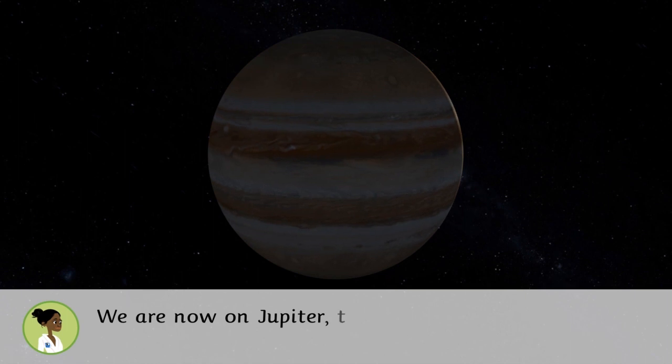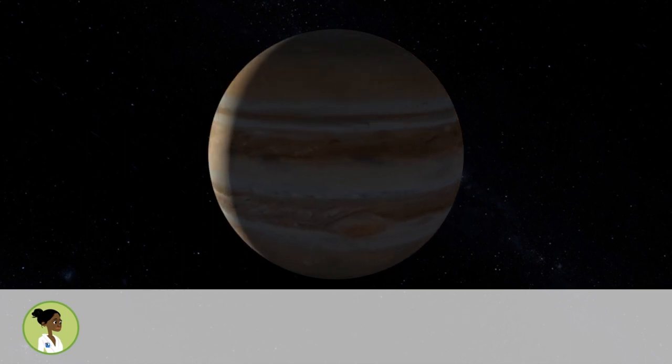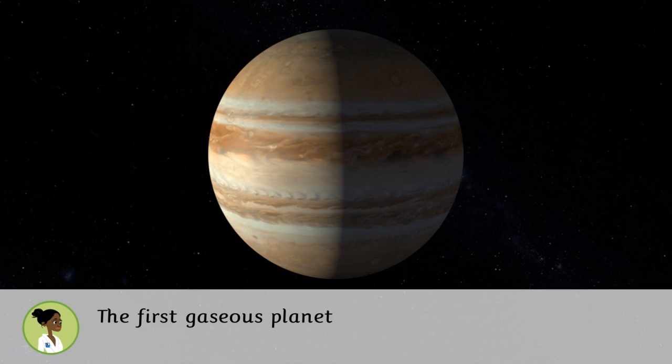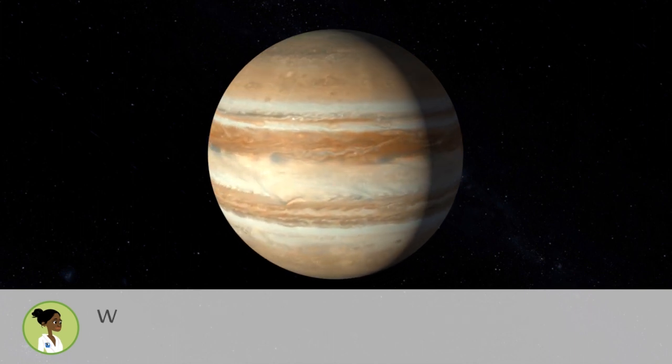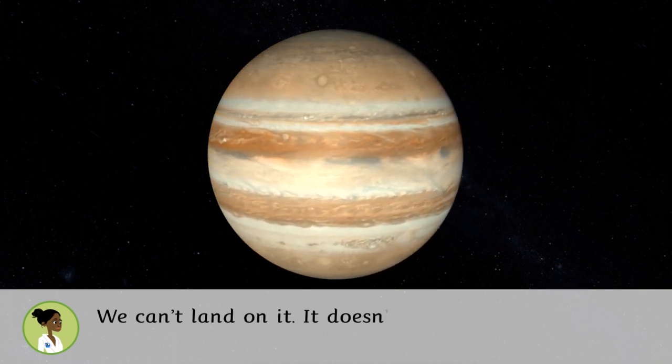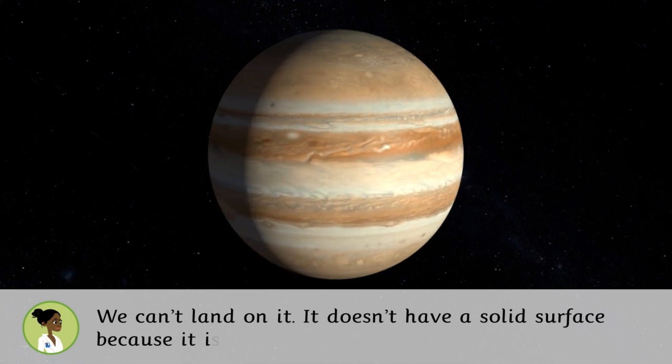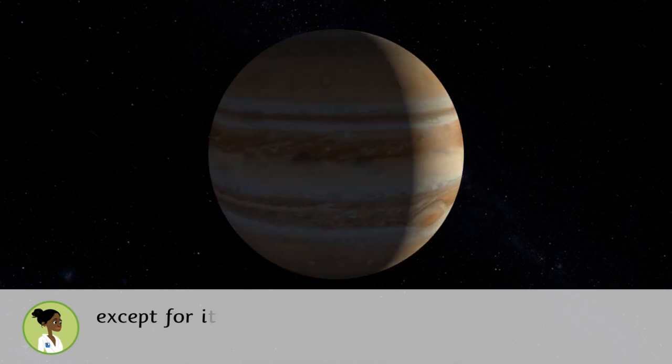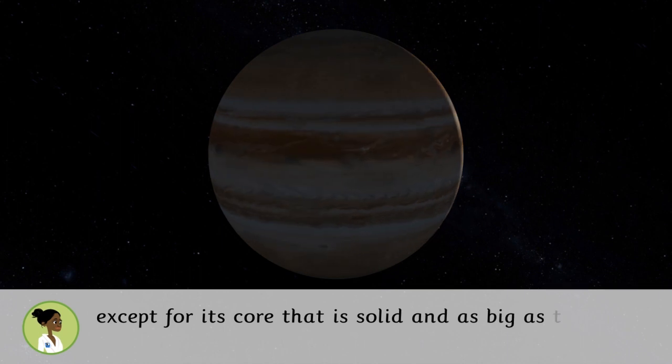We are now on Jupiter, the giant planet, the first gaseous planet of the solar system. We can't land on it. It doesn't have a solid surface because it is made of gas and liquids, except for its core that is solid and is as big as the Earth.